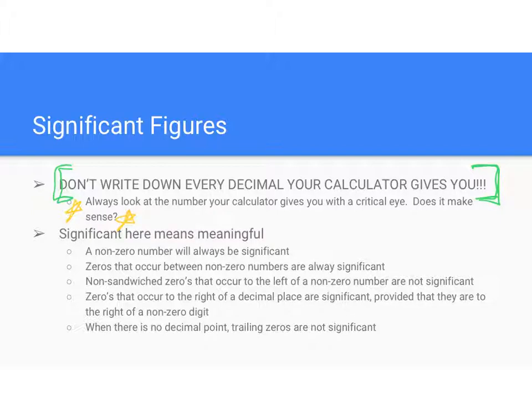Non-zero numbers always significant. Zeros between non-zeros always significant. Non-sandwich zeros that occur to the left of a non-zero number are not. So what is that? That is point zero zero five four. So this zero and this zero are to the left of a non-zero number.